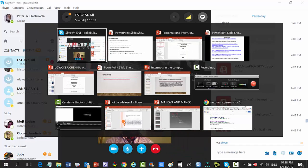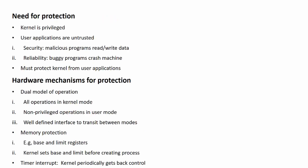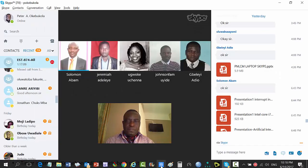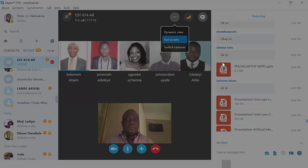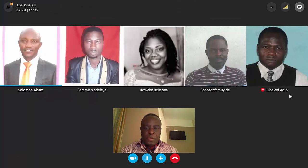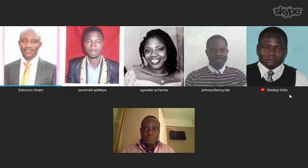Hardware mechanisms for protection include dual mode of operation — privileged operations in kernel mode, non-privileged operations in user mode, with a well-defined interface to transit between modes. We also have memory protection, for example base and limit registers; the kernel sets base and limit before creating processes. Timer interrupts allow the kernel to periodically regain control. These measures prevent frequent occurrence of disruptive interrupts so that computing processes go as planned.